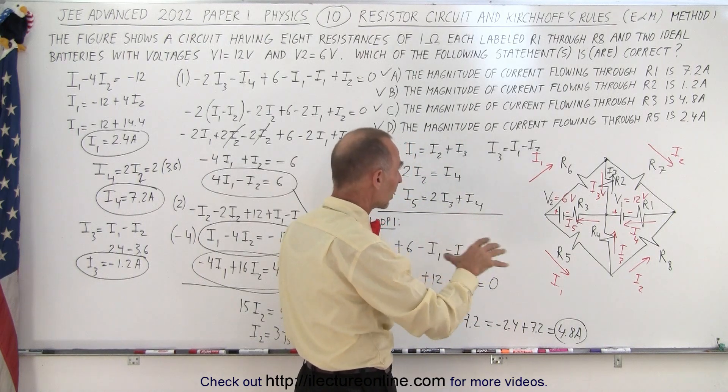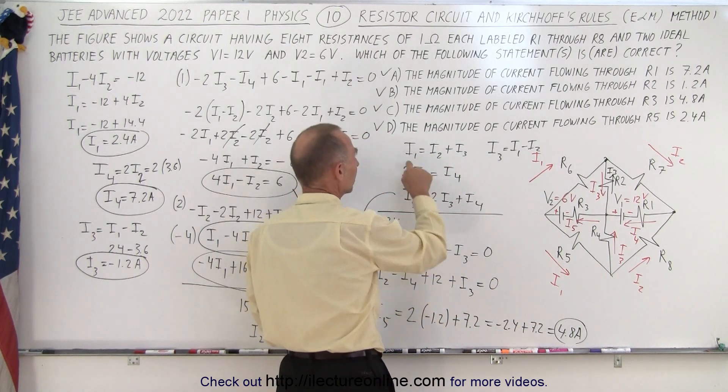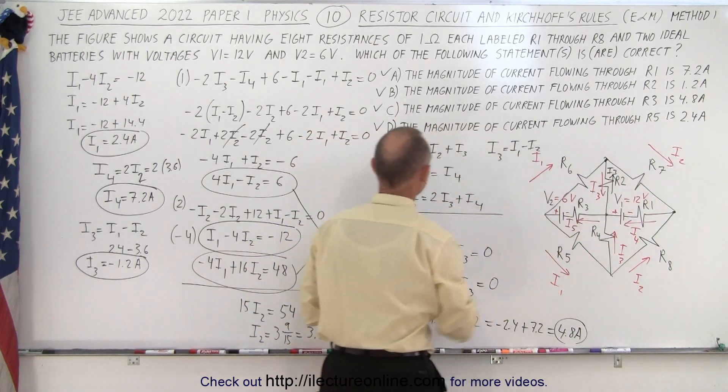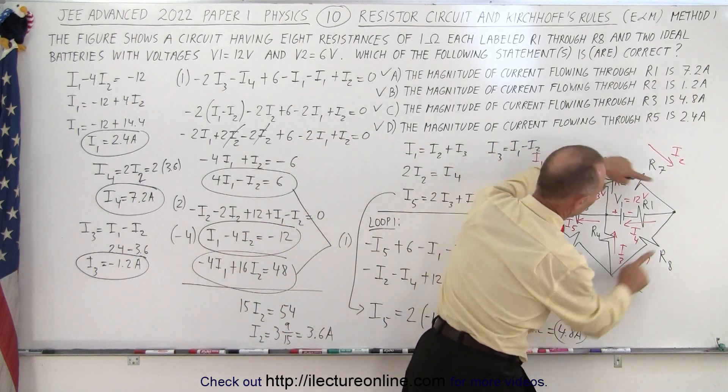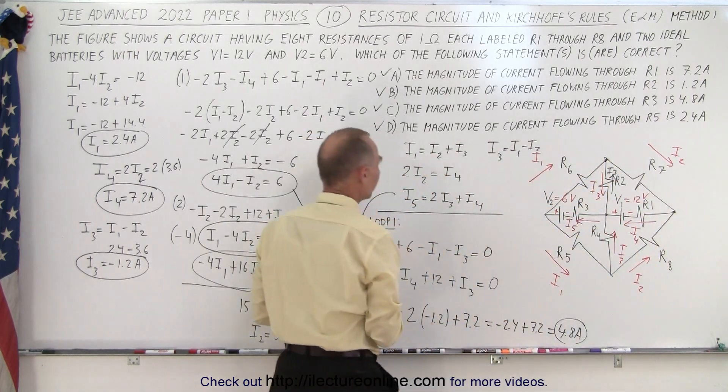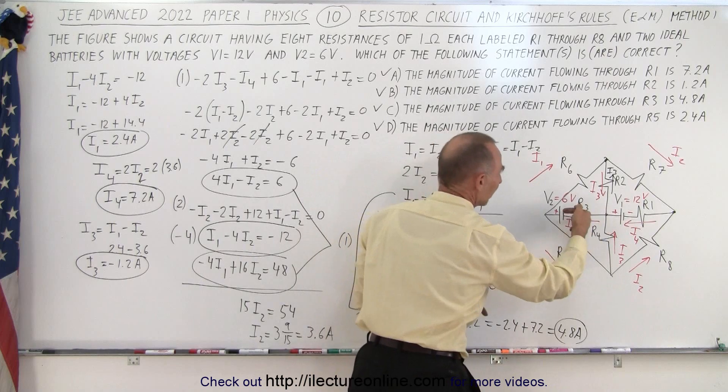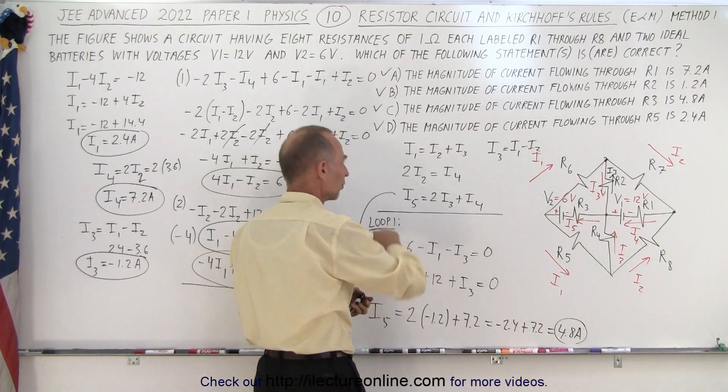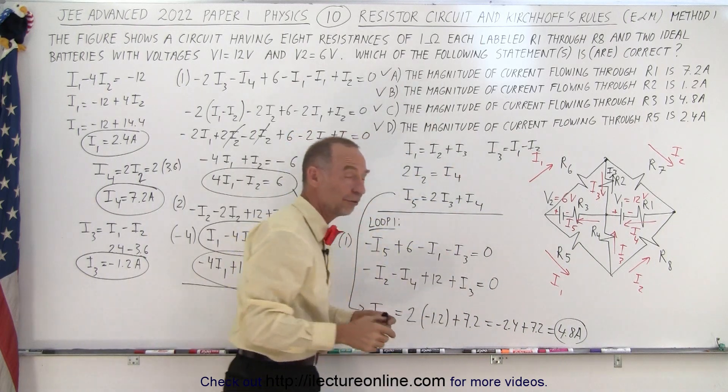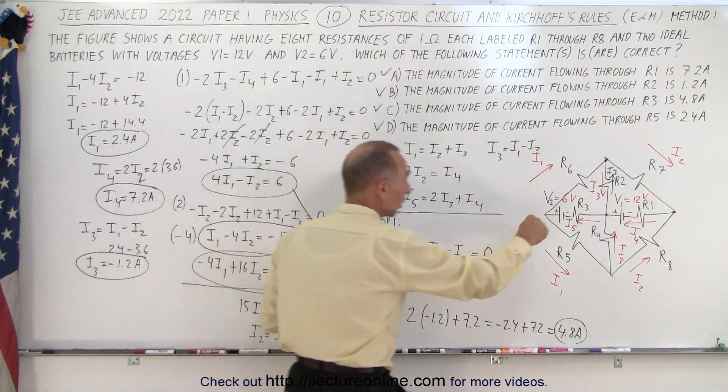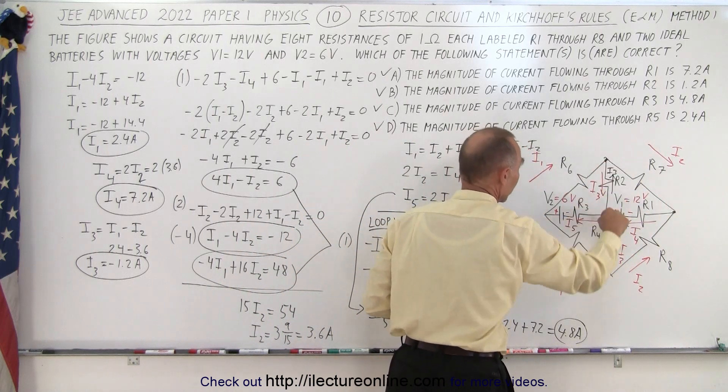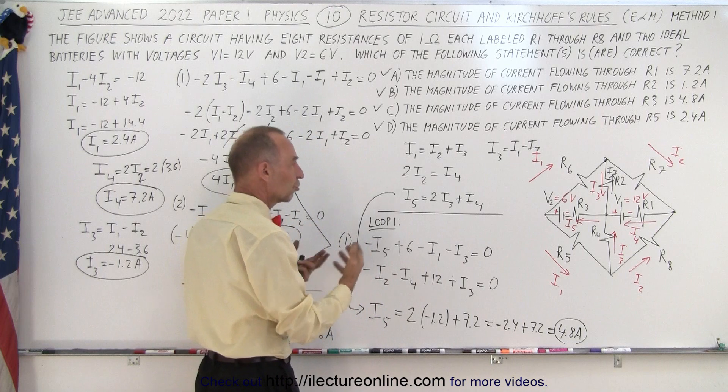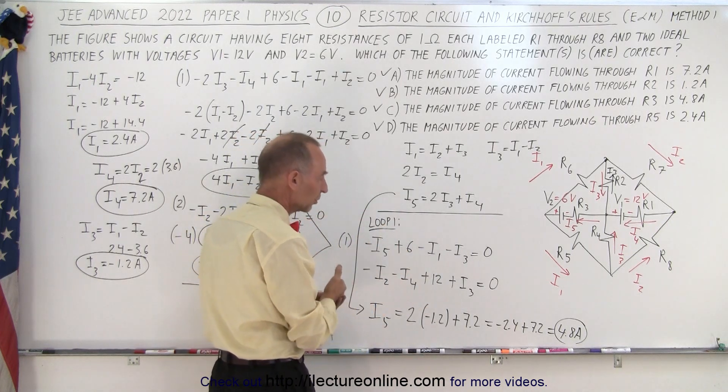So then by looking at the currents, we can make these three connections. I1 is equal to the sum of I2 and I3. Two I2, the two I2s coming together, add up to I4, and I5 is made up of the I4 and two I3s coming together. So that's what we have here. So we have the three equations. To find the next two equations, we do a loop around these two right here, loop one and loop two. So we do all the voltage rises and voltage drops.